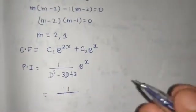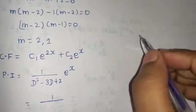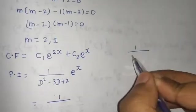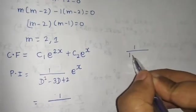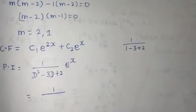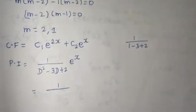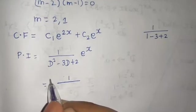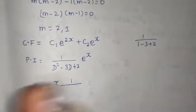So you will get, just check on rough side because maybe this becomes 0. So 1 upon (1 - 3 + 2), so as you can see this is becoming 0. So what we do when it becomes 0? We simply multiply by 1x outside the operator, not within the operator.